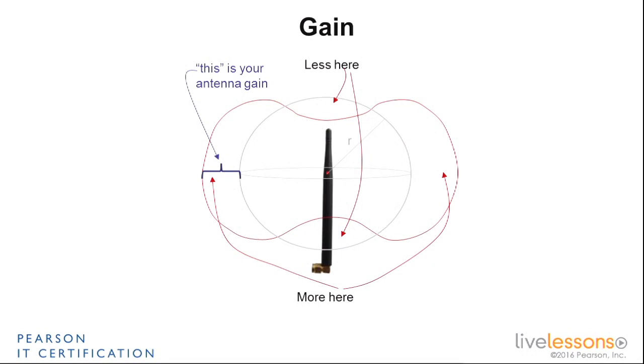The thing to keep in mind is that we do not care about where it sends less than the isotropic. So the less area, the top, the bottom does not matter. What we try to measure is how much more it sends in the areas where it sends more than the isotropic, which is this small blue area here.